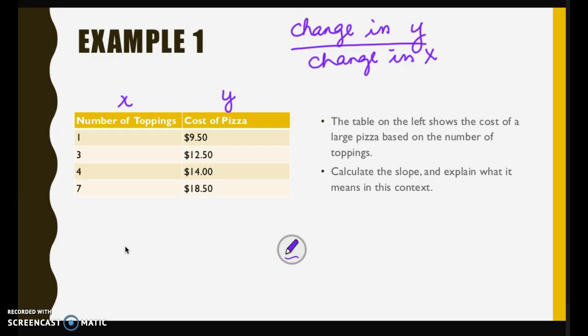This asks me to calculate the slope and explain what it means in this context. I'm going to look at the cost of the pizza and the change in y. From $9.50 to $12.50, it changes by three dollars. The number of toppings goes from one topping to three toppings, it changes by two toppings. So I'm going to take that change in y, which is three dollars, and divide it by the change in x, which is two toppings. Three divided by two is 1.5.